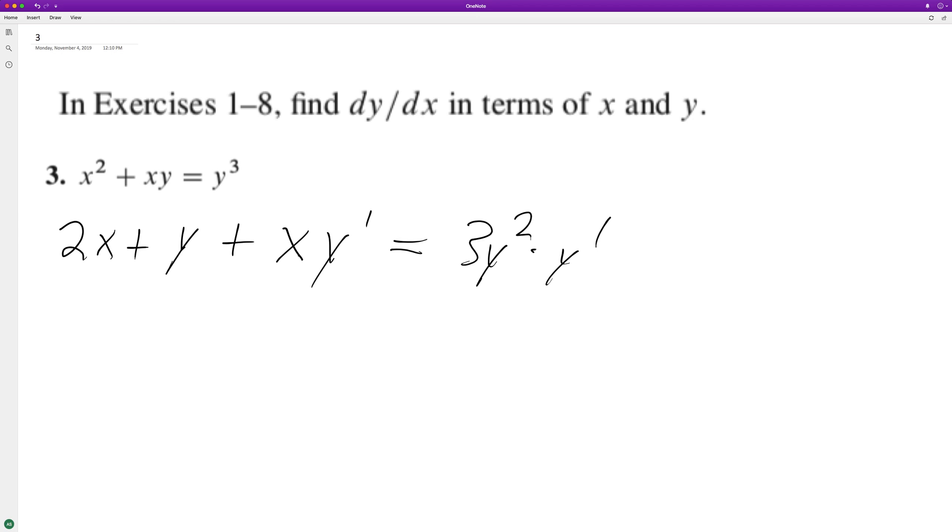So what we want to do is get all the y primes on one side and then factor them out. So I'll put 3y squared times y prime minus xy prime. I started off writing the right side of the equation, and then I subtracted this portion right here is equal to 2x plus y.